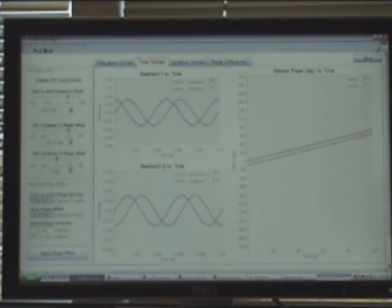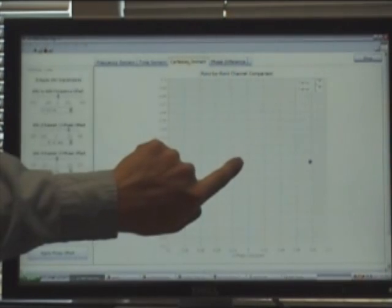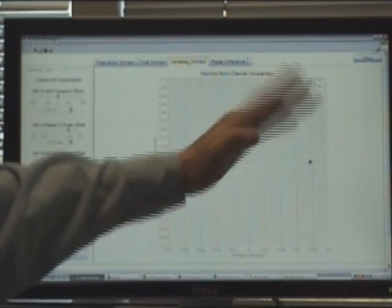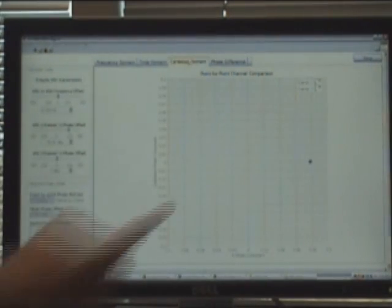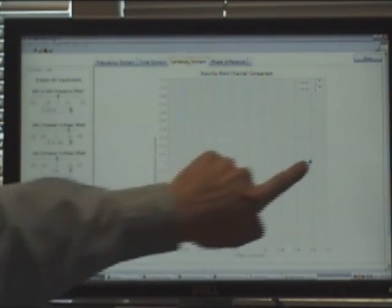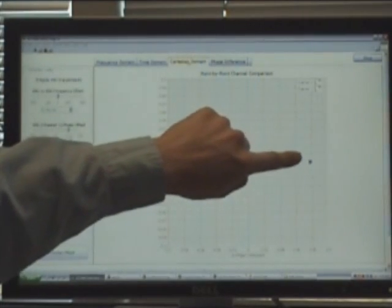A second way that we can visualize this is in the Cartesian domain, where we're looking at polar coordinates. When we look at the Cartesian domain, every series of samples has both a magnitude and a phase. Here we can see the magnitude and the phase is 0. Also, because I've removed my frequency offset between two channels, each point in my acquisition overlays one another.